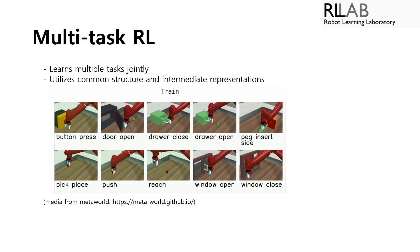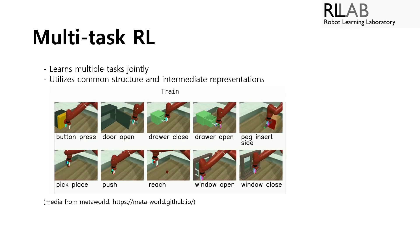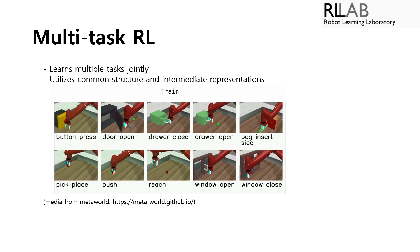Multitask RL is basically training a single network on multiple tasks. Sharing common network allows to reuse and utilize common structures across different tasks. We use the MetaWorld as a robotic manipulation benchmark to test our algorithm on.